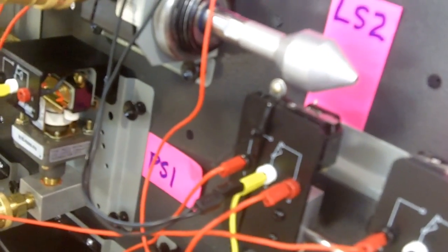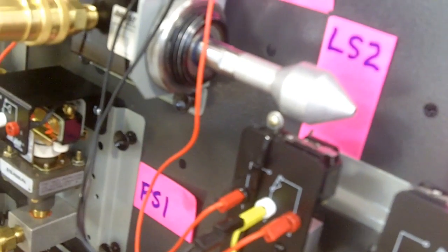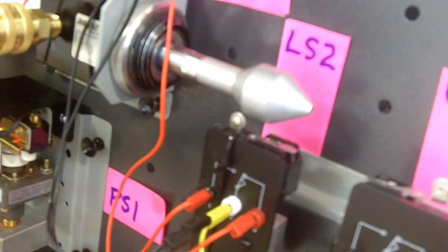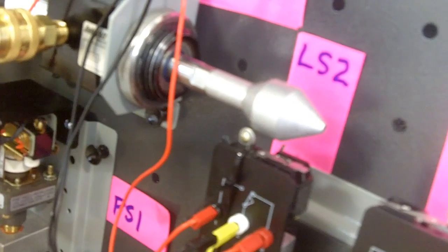Okay, so if we remember from our ladder logic diagram, limit switch 2, the top rung, is a normally open being held closed.